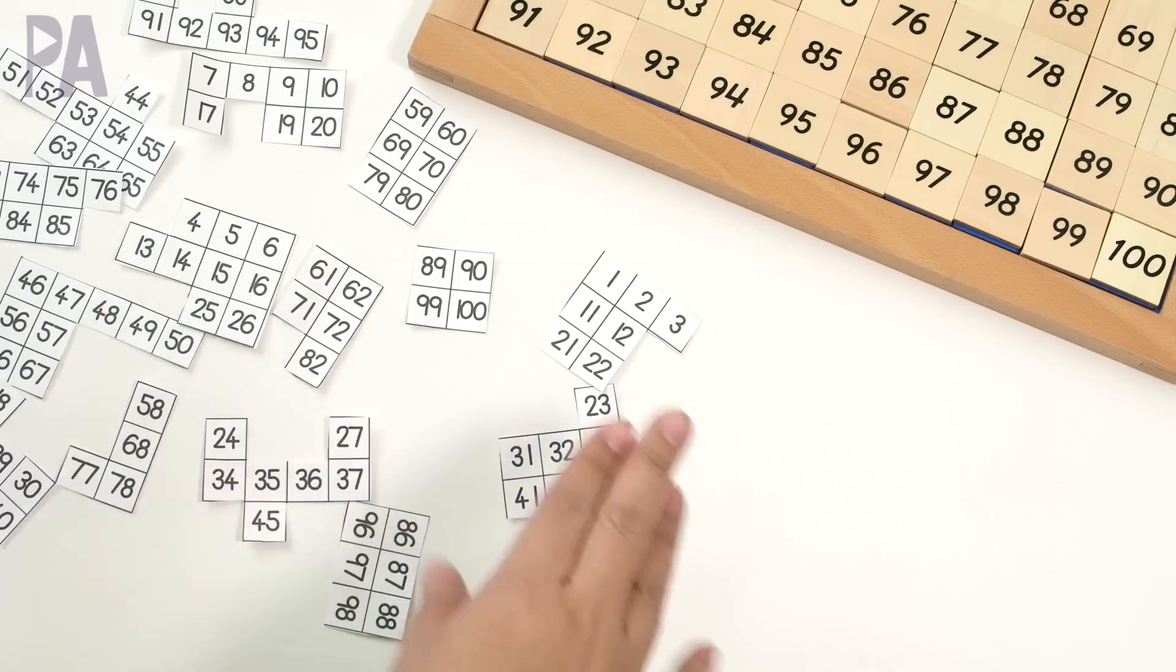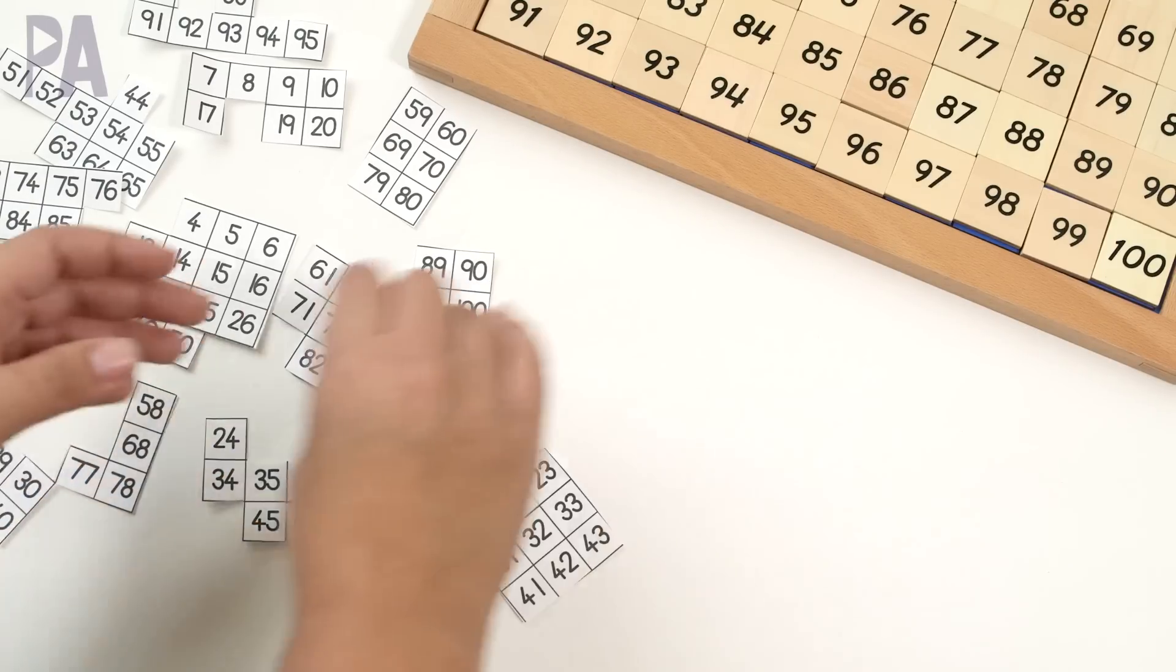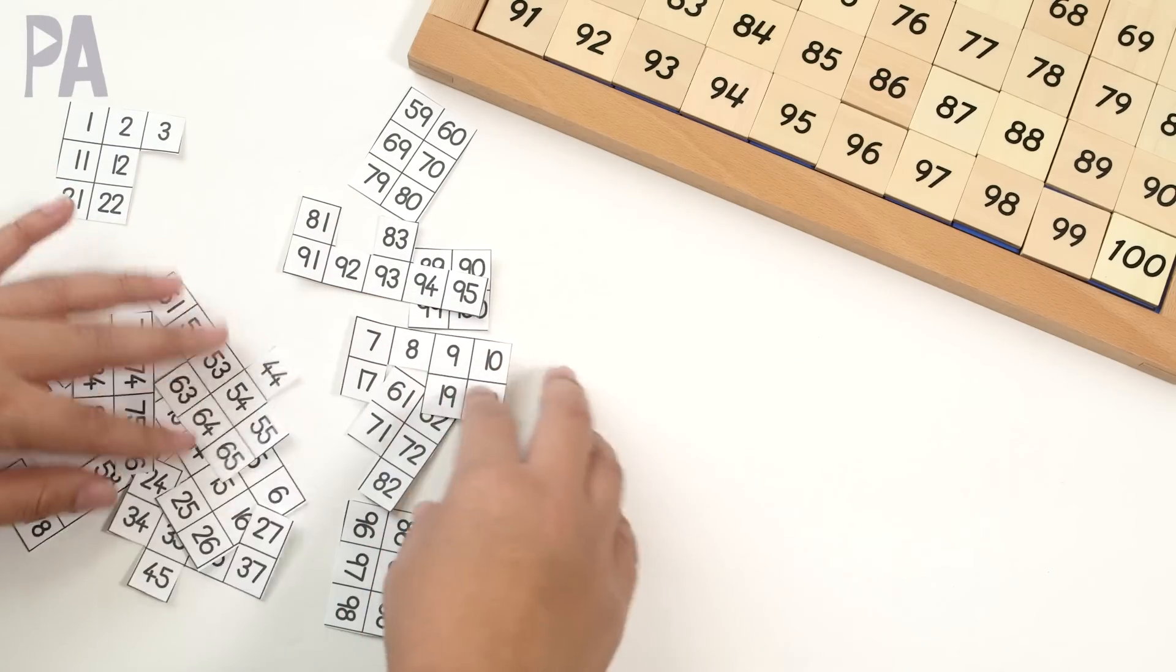Once you got all of your pieces cut out, you can start the puzzle. So basically when you finish the puzzle, putting all the pieces together, it's going to form a 100 chart. Let's see how good I am at putting it together.